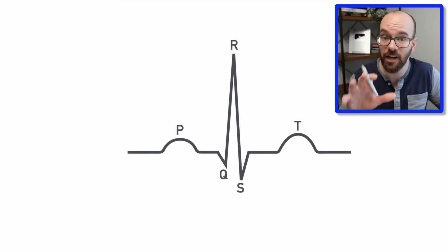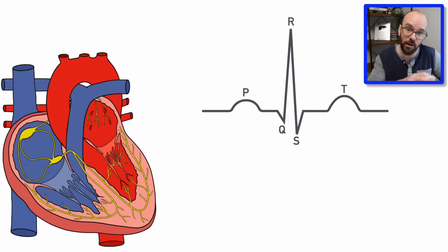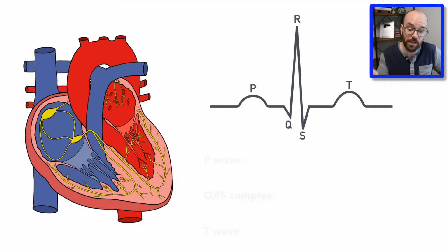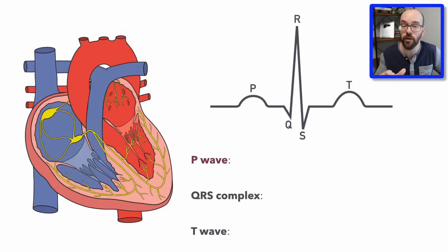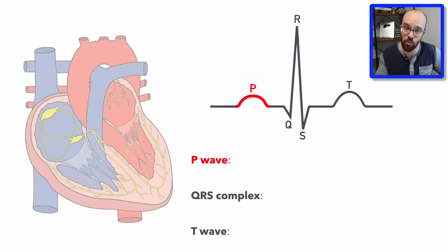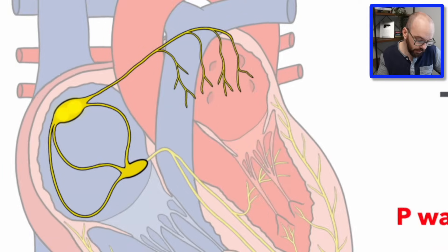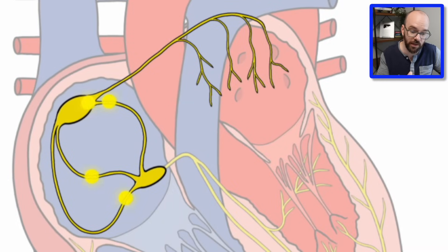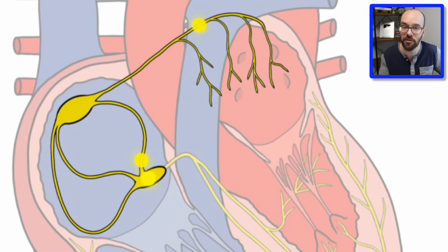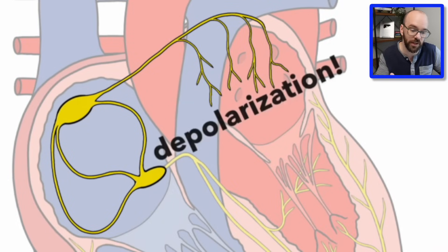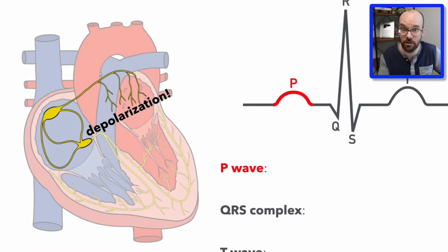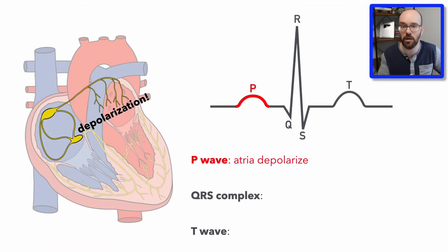We're going to connect the ECG to the cardiac conduction pathway, looking at the P wave, QRS complex, and T wave. Starting with the P wave: the P wave corresponds to the depolarization of the atria. You can see those signals traveling through the different pathways, causing depolarization of the atria — that's the main thing happening in the P wave.